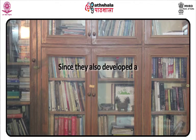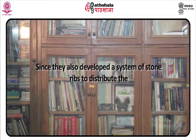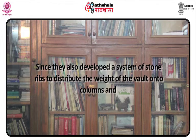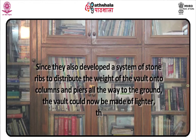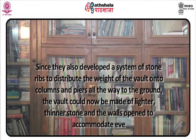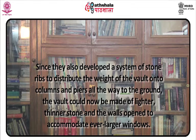They also developed a system of stone ribs to distribute the weight of the wall onto columns and piers all the way to the ground. The wall could now be made of lighter, thinner stone, and the walls opened to accommodate ever larger windows. The emphasis of Gothic architecture is its vertical aspect. On the exterior, the verticality is emphasized in a major way by the towers and spires, and in a lesser way by strongly projecting vertical buttresses.